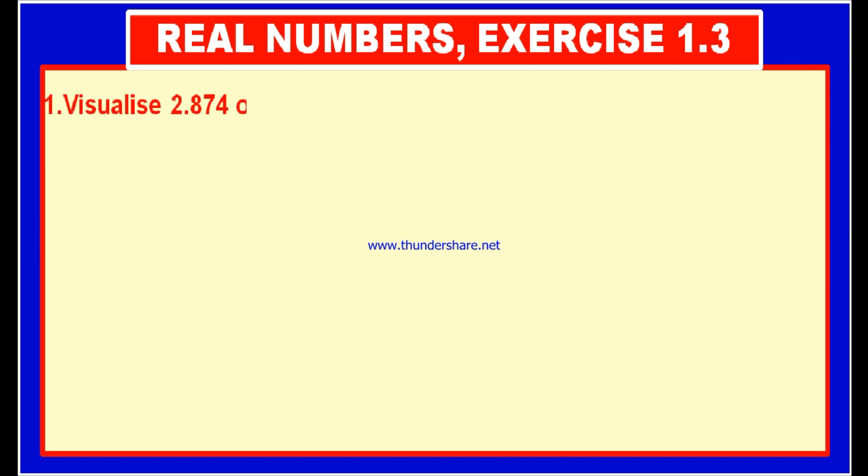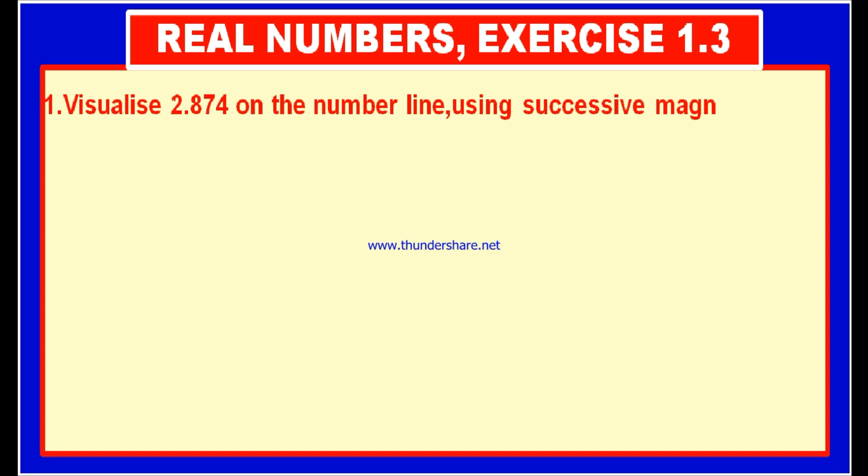Here is question number 1: Visualize 2.874 on the number line using successive magnification. Here we have given a decimal number, and we know that there are different types of decimal numbers. First is terminating decimal, another one is non-terminating non-recurring decimal, and another one is non-terminating and recurring decimal. Out of these three types, the given decimal number is a terminating decimal.